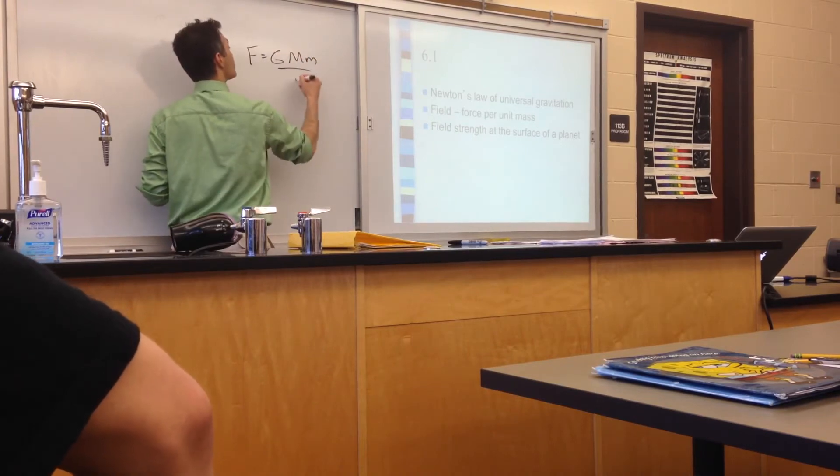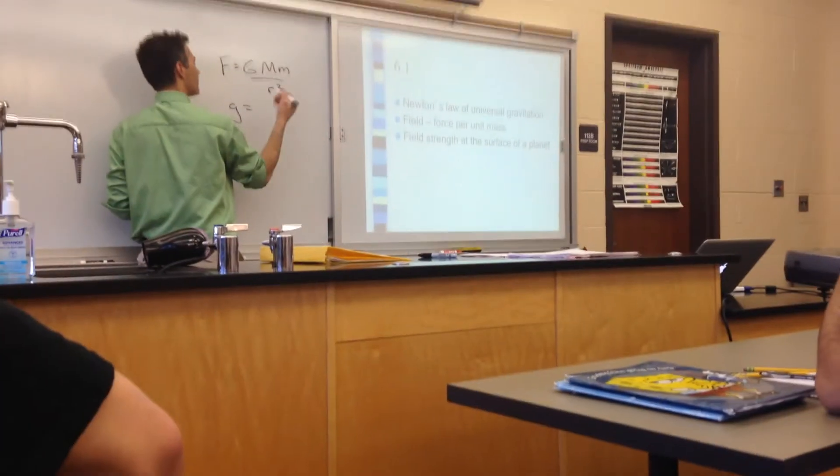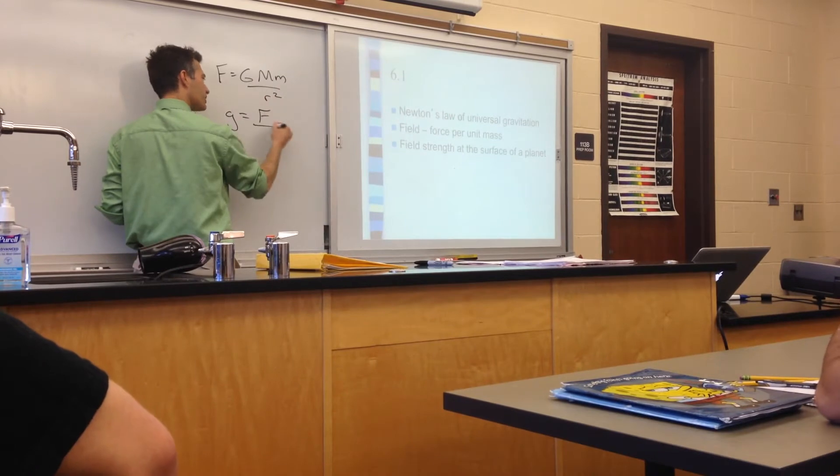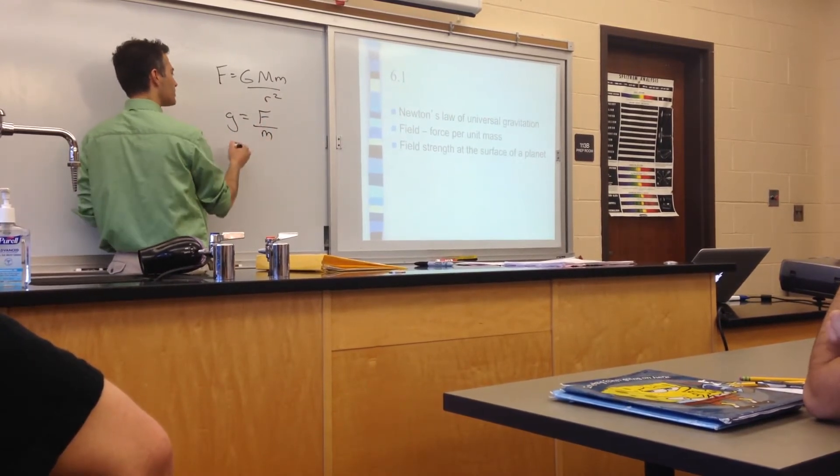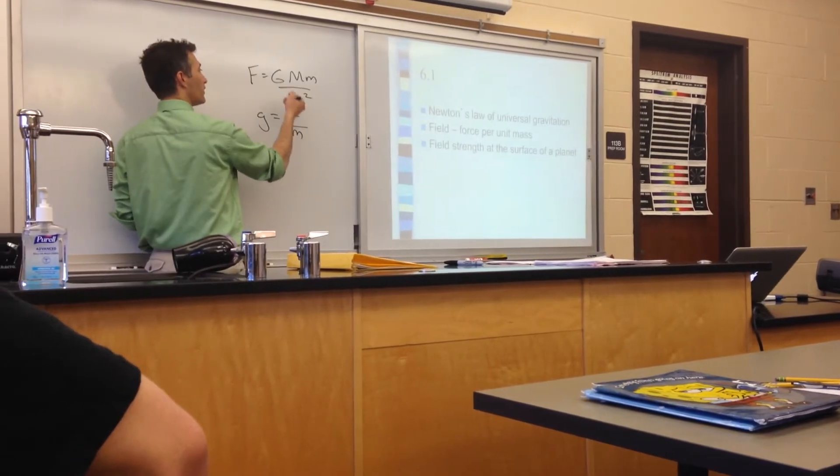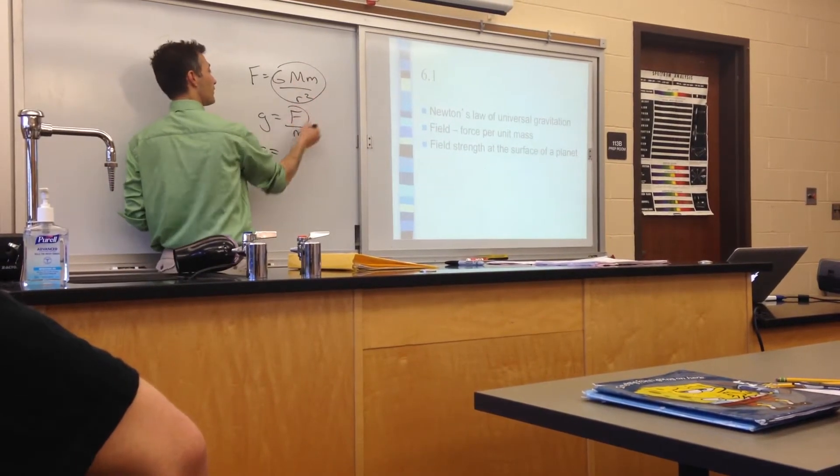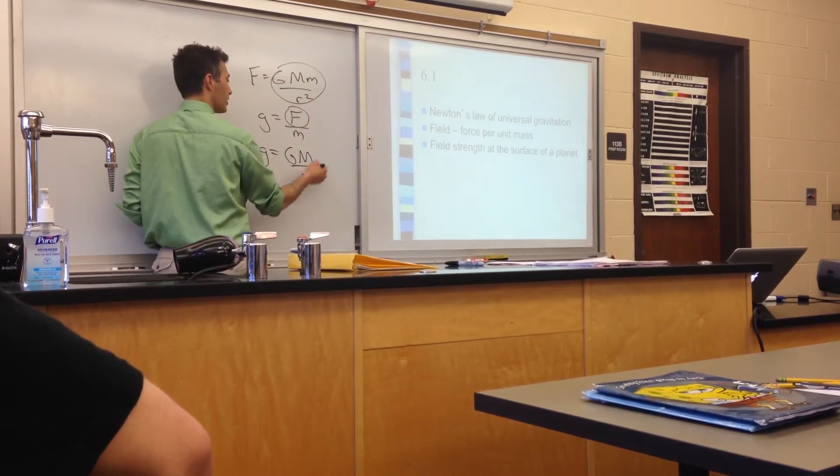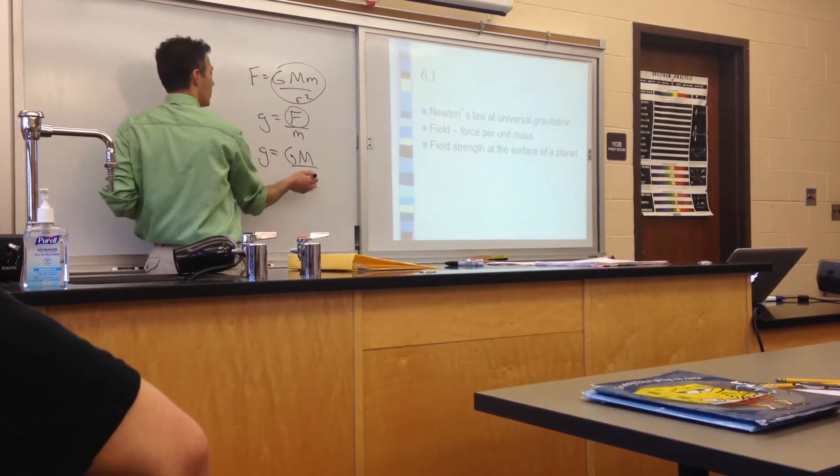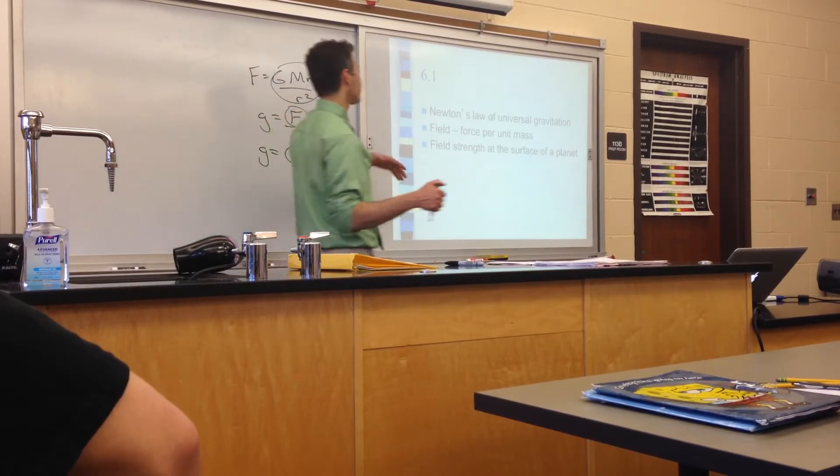In the data book, they tell us that gravitational field strength is force per unit mass. Sometimes we might find it more convenient to substitute this. And for this force, I'll end up with gm over r squared, where the big M is the thing that's creating the field, and the r is how far we are from the center of that.